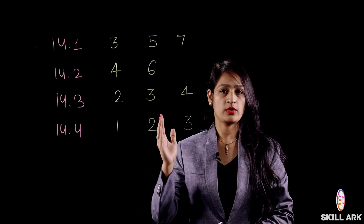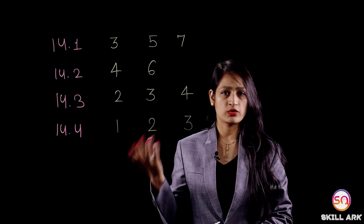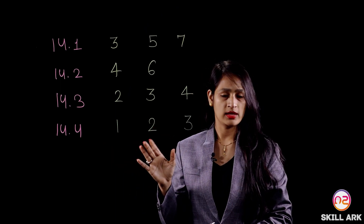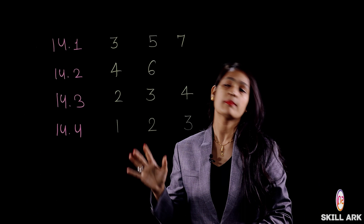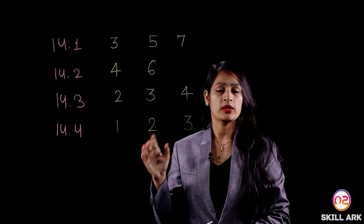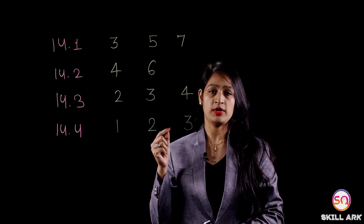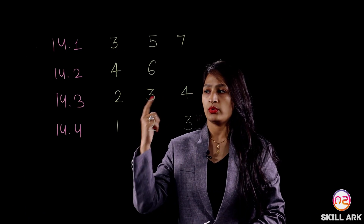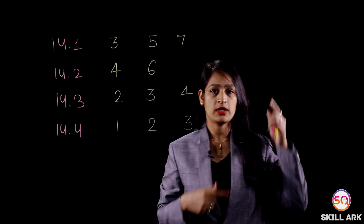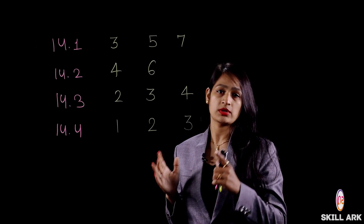Exercise 14.4 has question number 1, question number 2, and question number 3 — so 3 questions in this section are important. This is our exercise-wise important question overview. Since I have completed Chapter 14, you will get these links in the eye button so you can see all these questions.